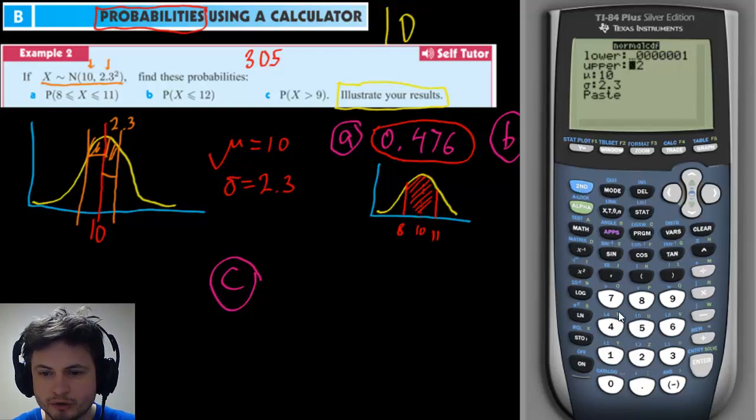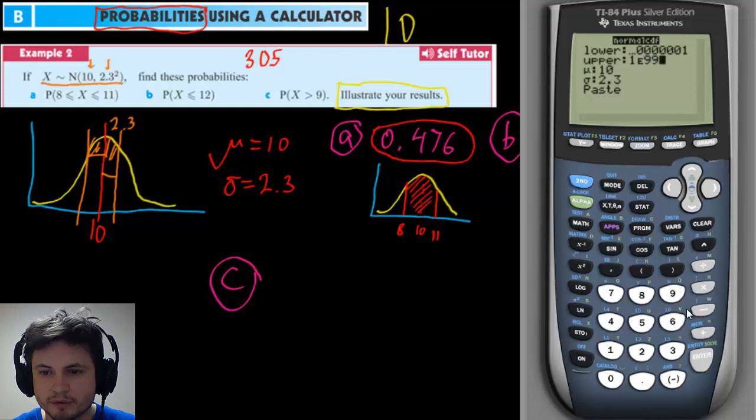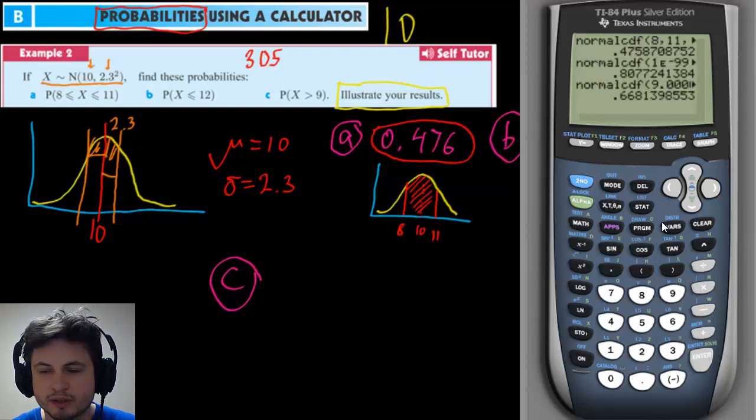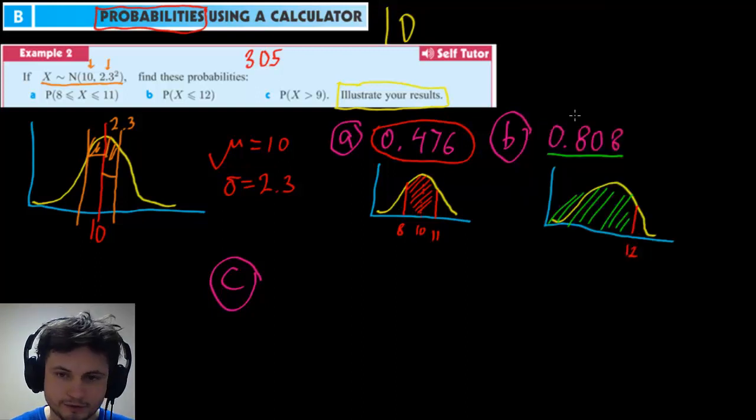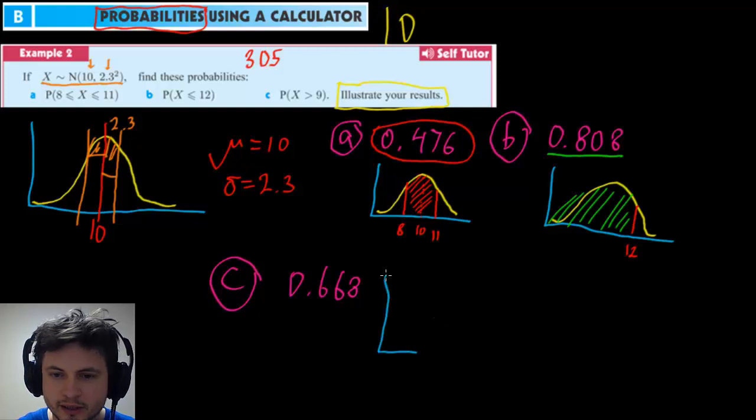So I'm going to just do this because it's still going to give us a pretty accurate value and here the upper value is going to be one E 99. So a very very large number, very large number, everything else is the same and the answer we get is 0.668, 0.668 or 66.8 percent and once again let's draw this just so we can visualize it and we have our normal distribution